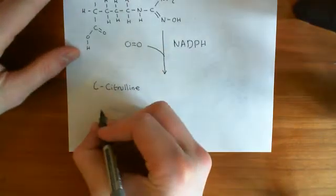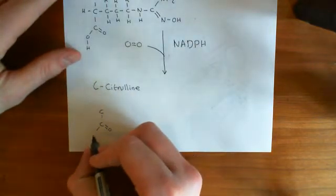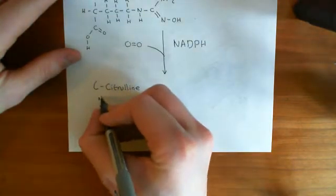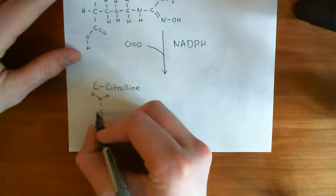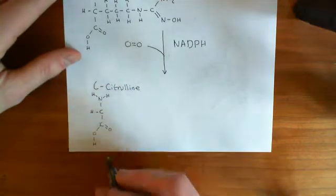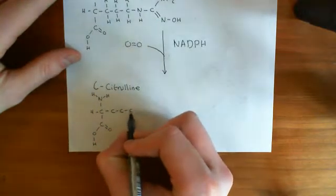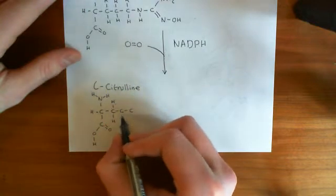Right. So, let me draw out the structure of L-citrulline, and then I will explain where everything's going. Okay. So, L-citrulline is another amino acid. It's not a proteinergic amino acid, so it's not used in proteins, but it has the amino acid structure. So, here's the core generic amino acid structure. And then it has a very similar R group to L-arginine. So, it has three methylene groups, like so.